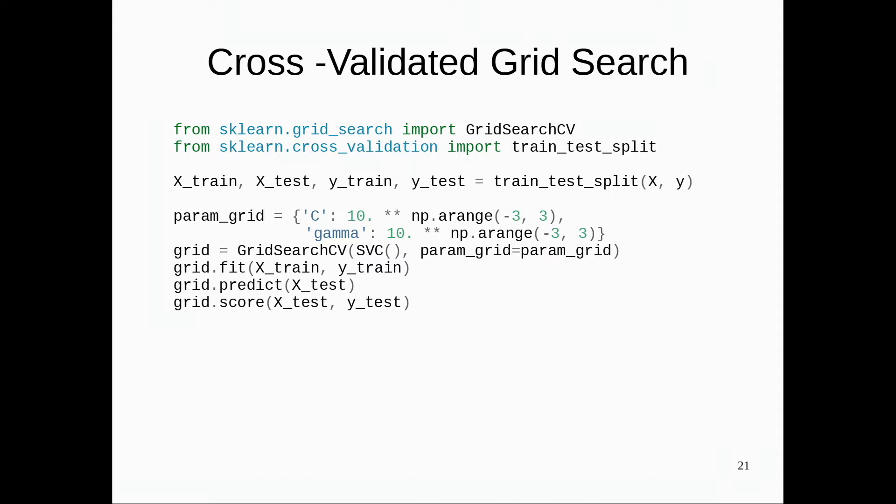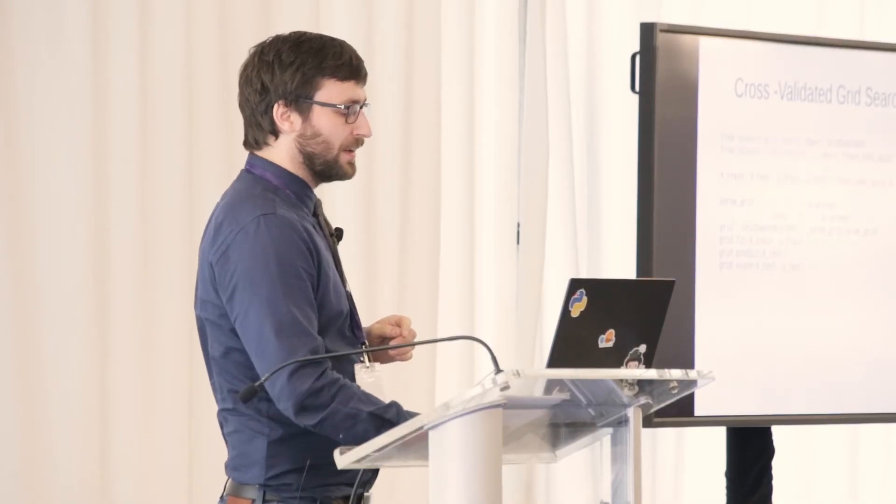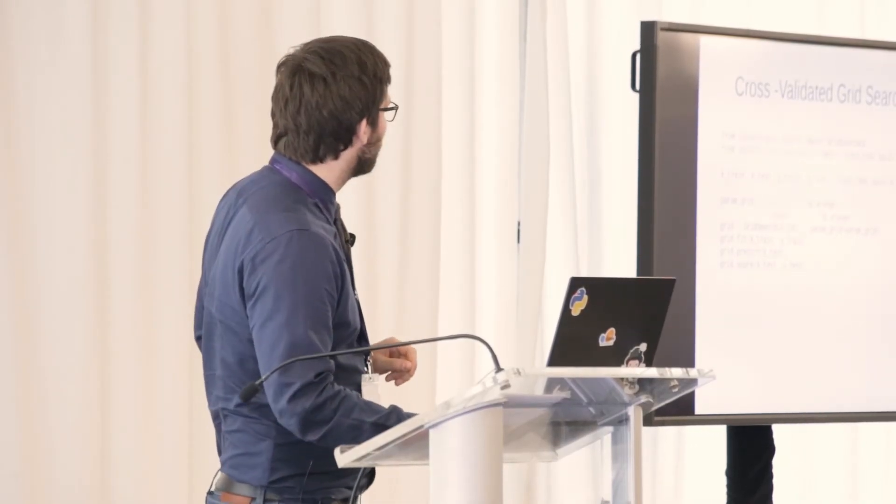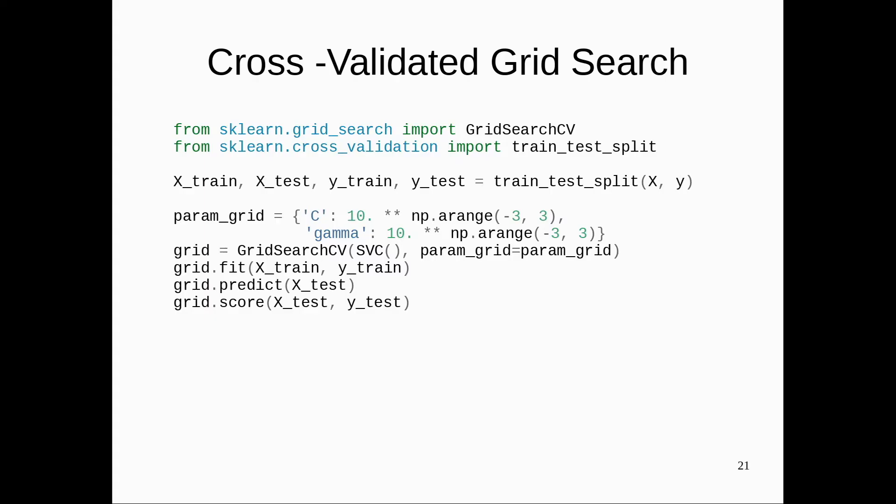The main class you need here is GridSearchCV, which implements grid search with cross-validation. First, split your data using train_test_split. Then define the parameters you want to search over. SVC is a support vector machine — by default it uses the RBF kernel, with two parameters: regularization parameter C and kernel bandwidth gamma. You specify a grid of what values of C and gamma to try — basically an exponential range from 10^-3 to 10^2 for both C and gamma.